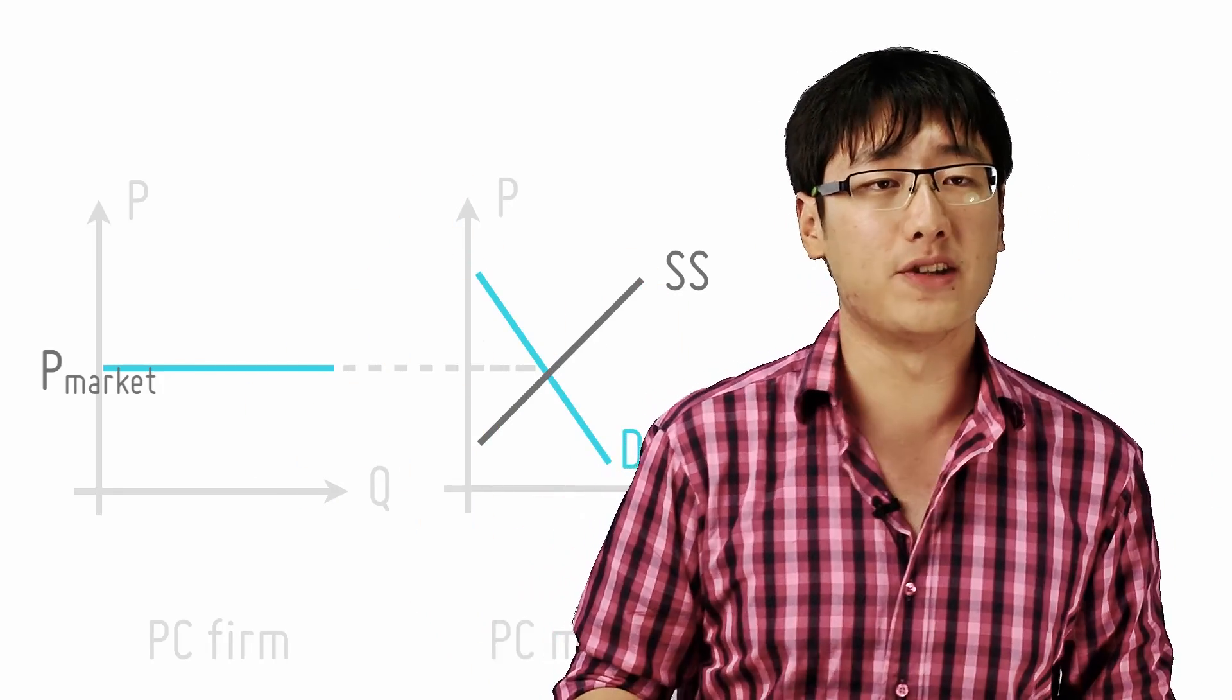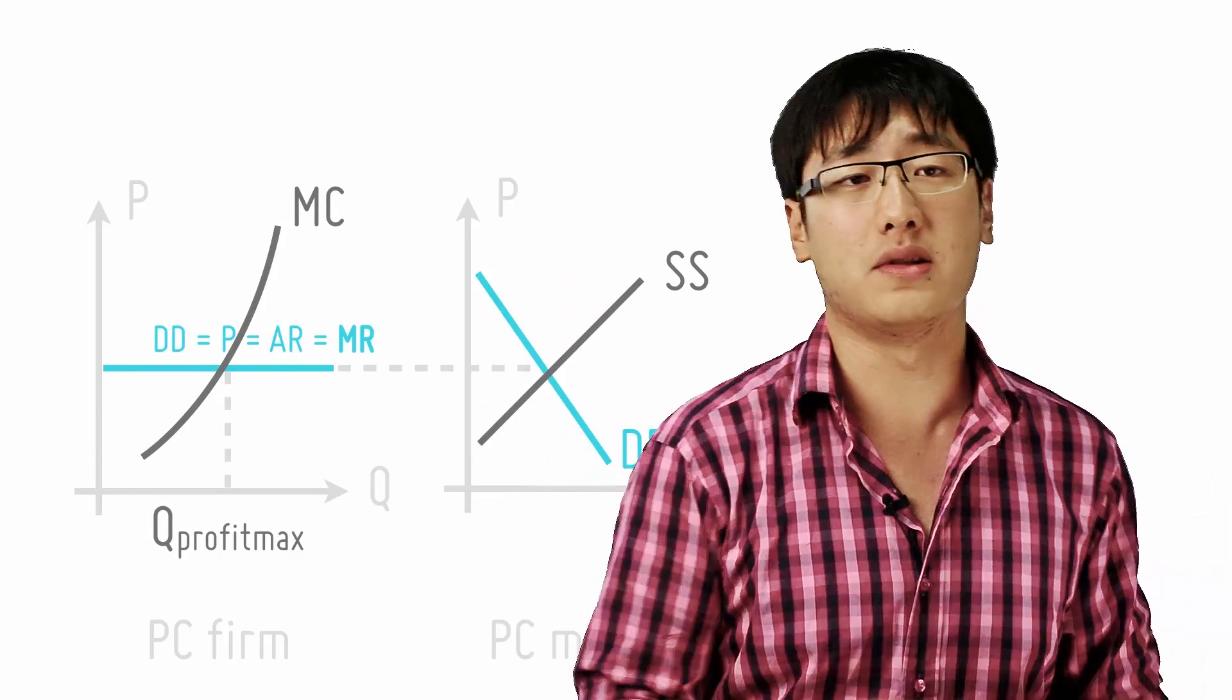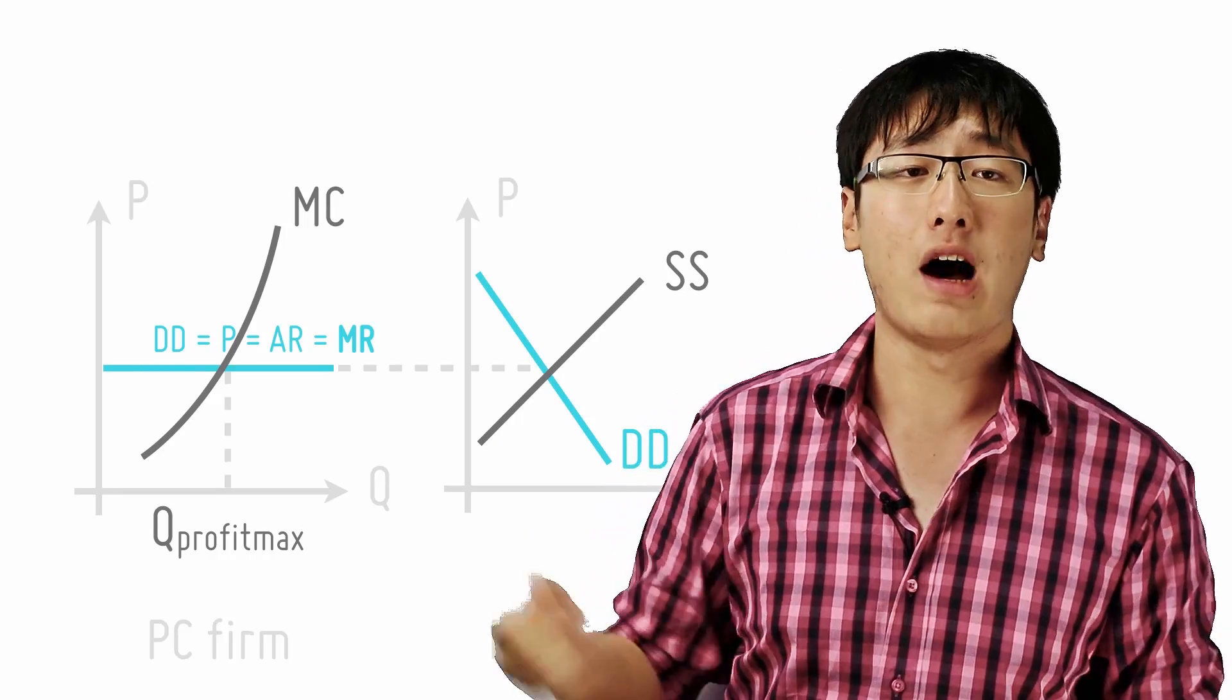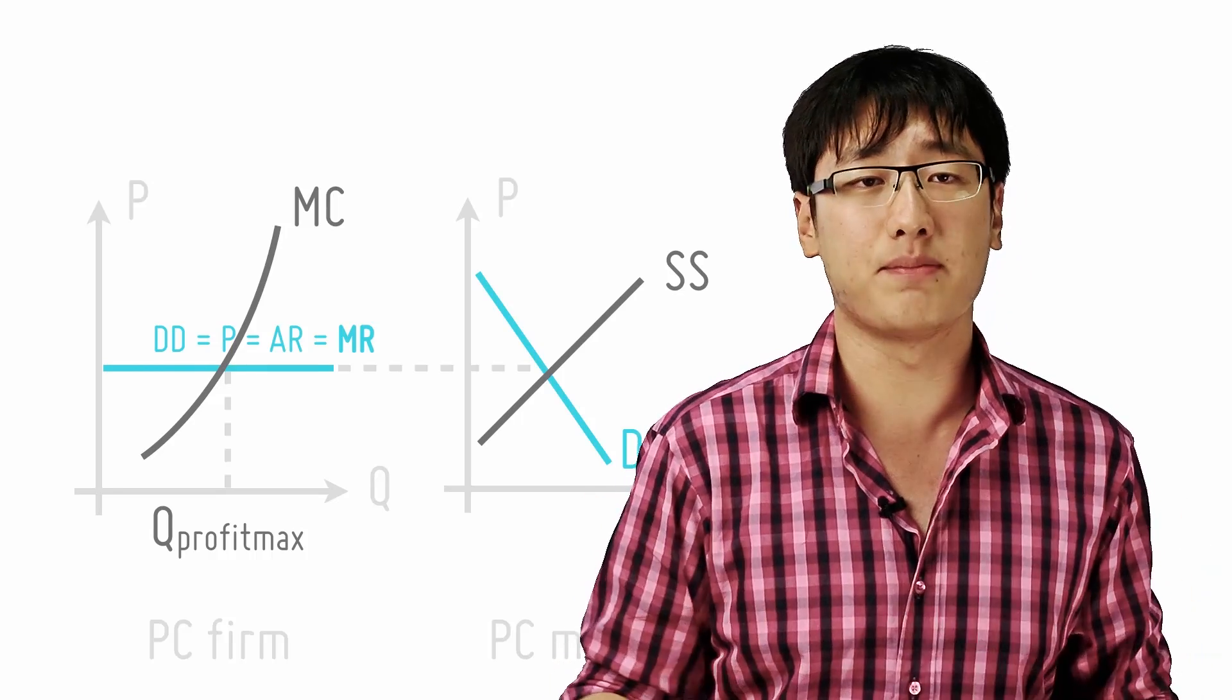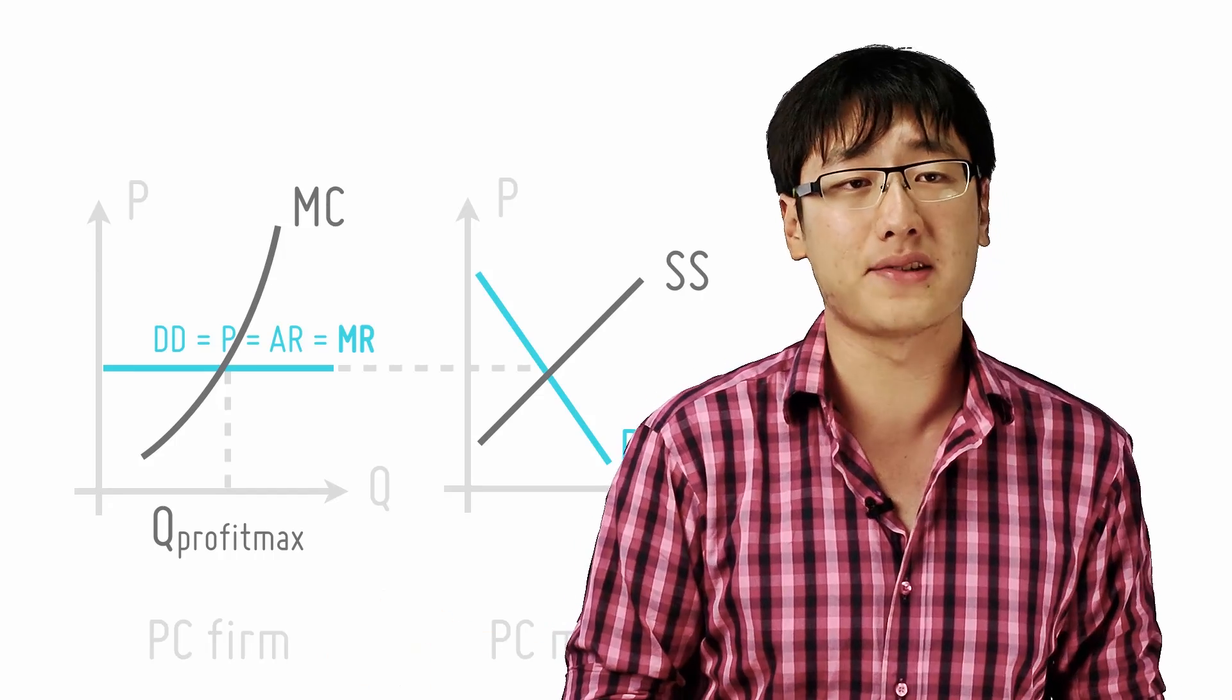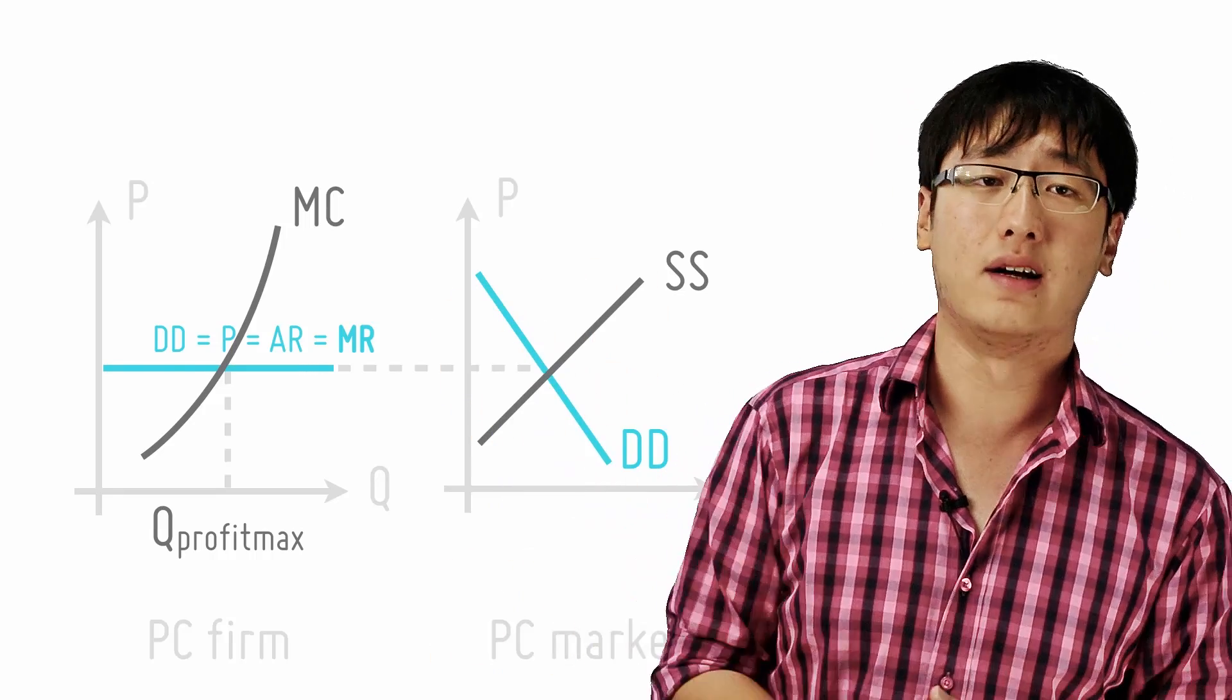And the firm will maximize profits when the marginal cost equals the marginal revenue, which we have explained already. The marginal revenue curve is also the demand curve, is also the average revenue curve, is also the price. And this happens at output Q where the marginal cost equals the marginal revenue and that is the profit maximizing quantity. Since the firm has only one price at every quantity, the marginal revenue will be equal to the price. So the firm produces at MC equals MR which equals AR which equals DD, the demand curve, which equals P.